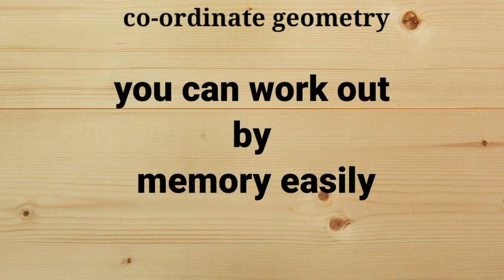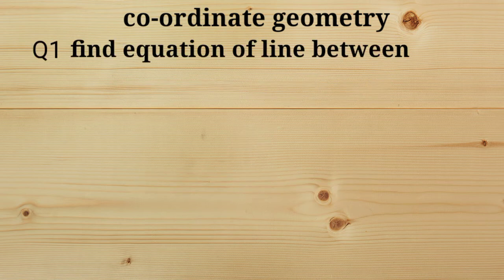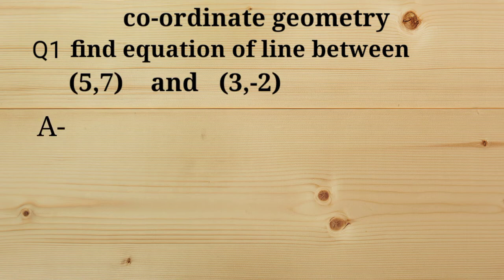Now the process is very simple. We can perform it by memory. Let us take question 1: Find equation of line through (5,7) and (3,-2).